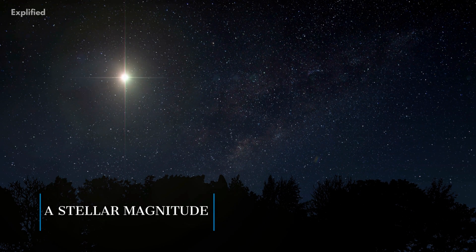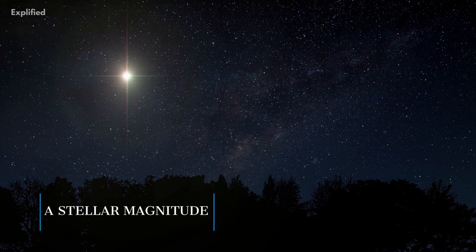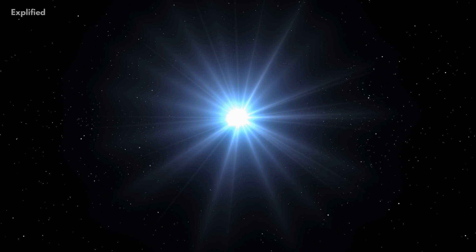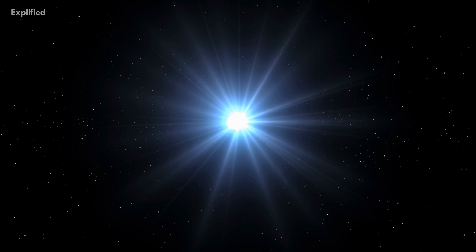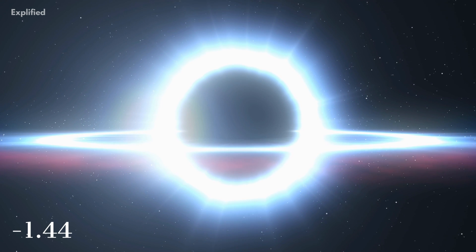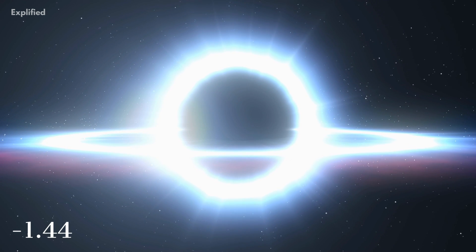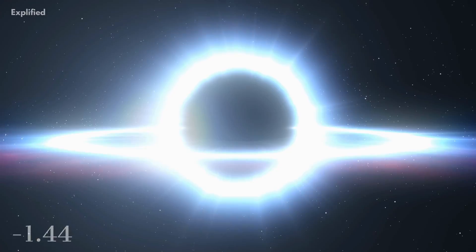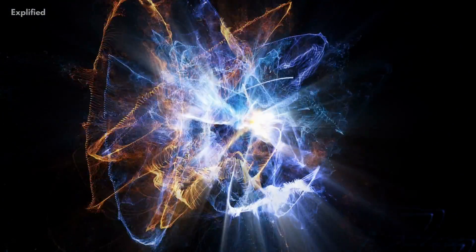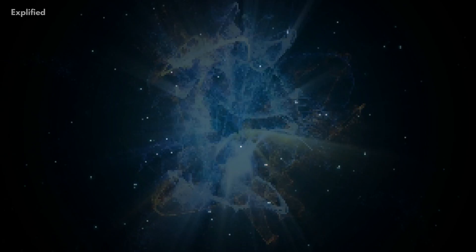A stellar magnitude is a unit of measurement used by astronomers to describe a star's brightness. The star will shine brighter when the number is lower. Sirius has a visual magnitude of minus 1.44, which is lower and brighter than any other star. In terms of real energy and light production, there are stars brighter than Sirius, but because they are further away, they appear darker.